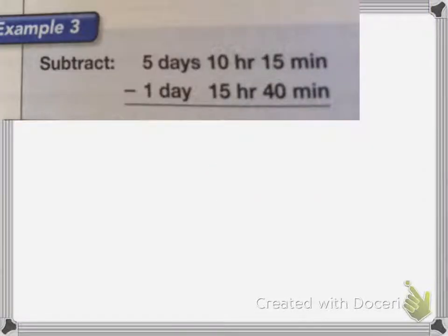Now with subtracting, we'll often have to borrow. Before we can subtract my minutes, I'm going to have to convert 1 hour to 60 minutes. So I'm going to borrow from the hours, 10 becomes a 9, and I'm going to convert 1 hour to 60 minutes. And I'm going to add that to my 45 minutes. So I end up with 75 minutes. So 75 minutes minus 40 minutes is 35 minutes.